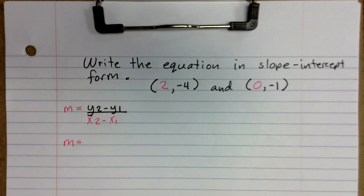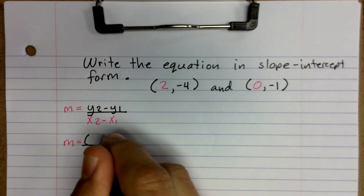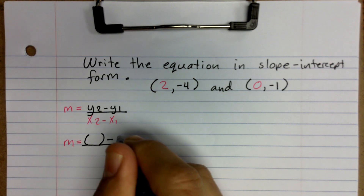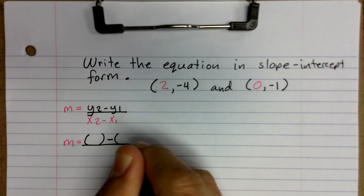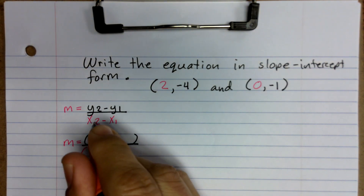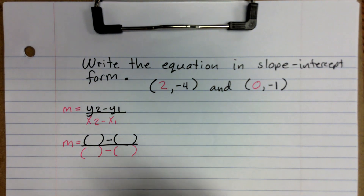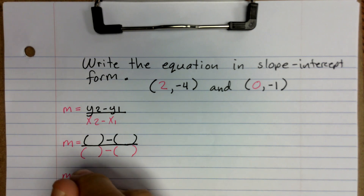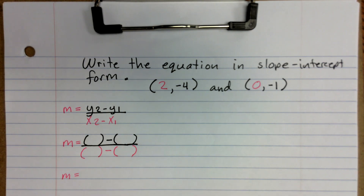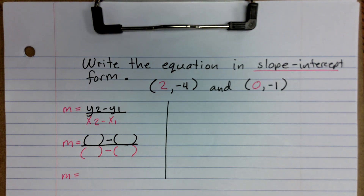I'm going to go ahead and set this up, and I recommend you do the same on any similar problems. I'm going to put a set of parentheses for y2, put my minus sign, and a set of parentheses for the y1 value. Then I'm going to do the same thing for x2 minus my x1 value. We'll get the slope, which will be used inside of another formula — the point-slope form — to get the equation in slope-intercept form.